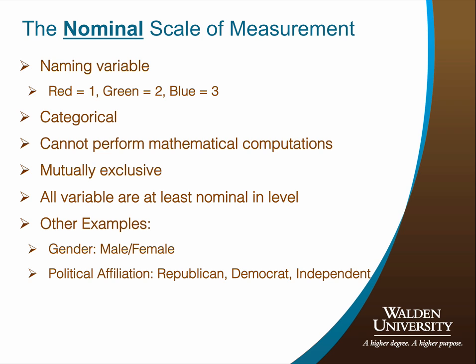For example, a study might include 10 participants whose favorite color is red, 12 participants whose favorite color is green, and 24 participants whose favorite color is blue. Notice, although each level of the variable is assigned a numerical value, it is still a categorical variable. A key concept in nominal variables is that it is mutually exclusive and exhaustive — that is, each unit of analysis in the study can only belong to one group. Other examples of nominal variables might be gender, with two levels: male and female; or political affiliation, with three levels: Republican, Democrat, or Independent. Take a moment to think about other variables that are measured on a nominal scale of measurement.